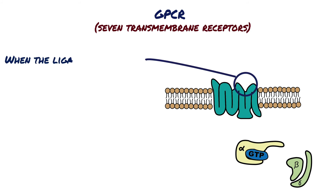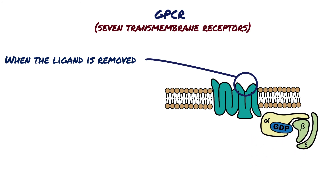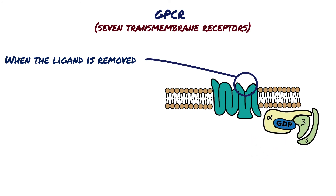When the ligand is removed, the alpha subunit will hydrolyze GTP back to GDP, at which point the G-protein becomes inactive. The inactive G-protein reassembles as a three-piece unit associated with the G-protein coupled receptor.